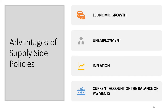Thirdly, inflation. Whereas policies that increase aggregate demand to achieve economic growth are likely to bring inflationary pressures, supply side policies reduce inflationary pressures. If firms are more productive, average costs of production fall — with the same number of workers producing more output, average cost of labour per unit of output goes down, reducing cost-push inflation. And lastly, the current account of the balance of payments: if firms are more productive, they become more competitive not just domestically but internationally, potentially causing exports to rise and improving the current account.